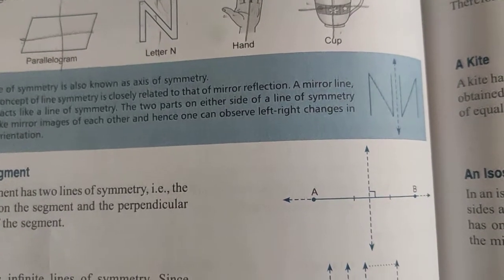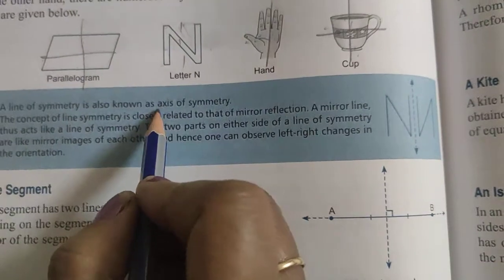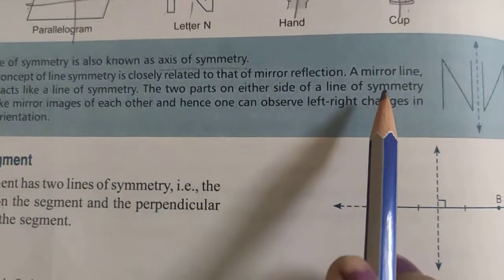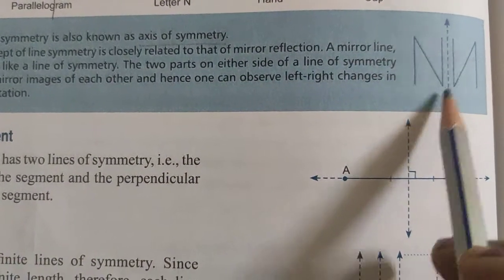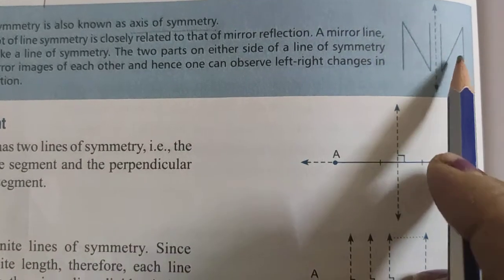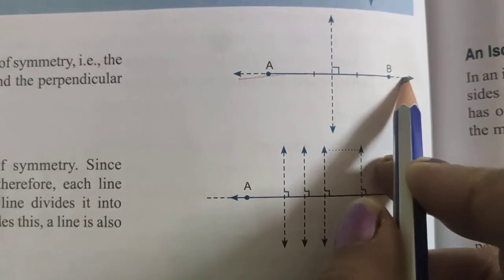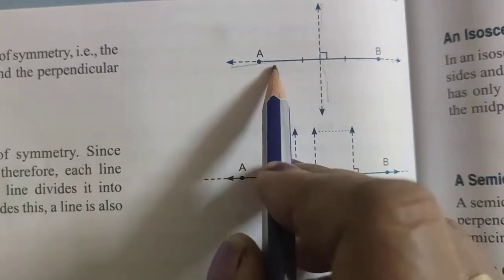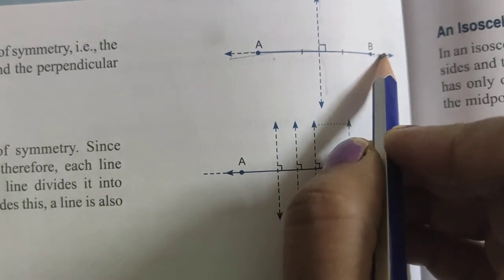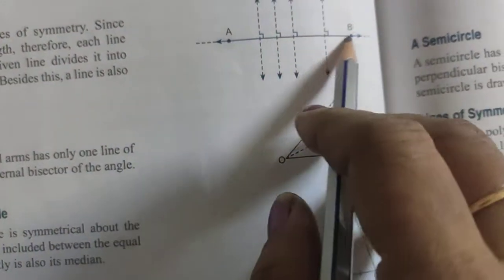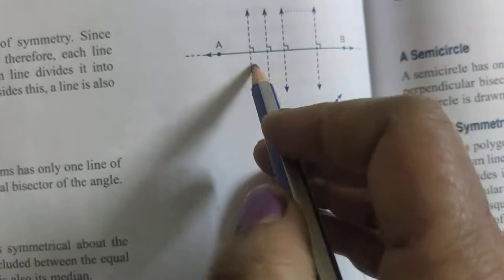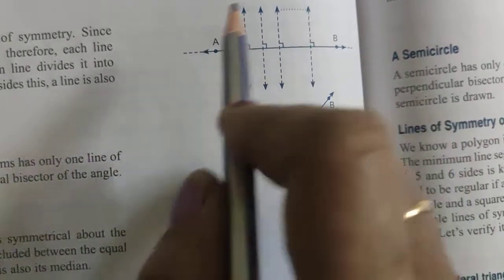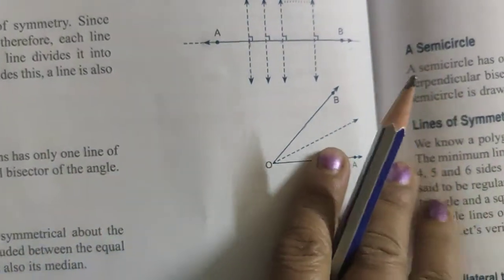Not all figures have a line of symmetry. A line of symmetry is also known as an axis of symmetry. The concept depends upon mirror reflection — if you put the mirror on the line, you get an equal reflection. A line segment has two lines of symmetry: one perpendicular and one along the line itself. An infinite line has infinitely many lines of symmetry.